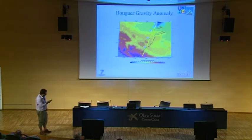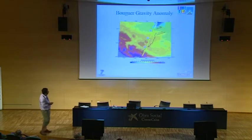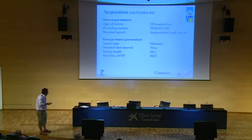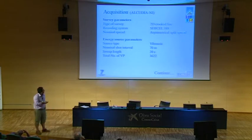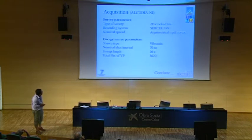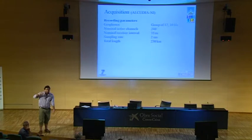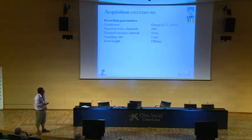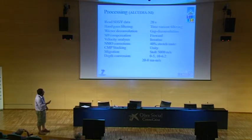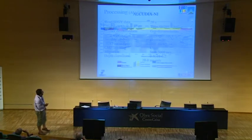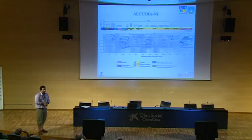I will be presenting four shots from south towards north across the Alcudia wide-angle transect. For the Alcudia normal incidence transect, we used VibroSeis and acquired around 230 kilometers of data, imaging about 20 seconds of the crust and upper mantle, which is approximately 60 kilometers deep. We did some processing on the dataset — I will not go into the details of that processing. Finally, the result is the stack section which was migrated and depth converted.